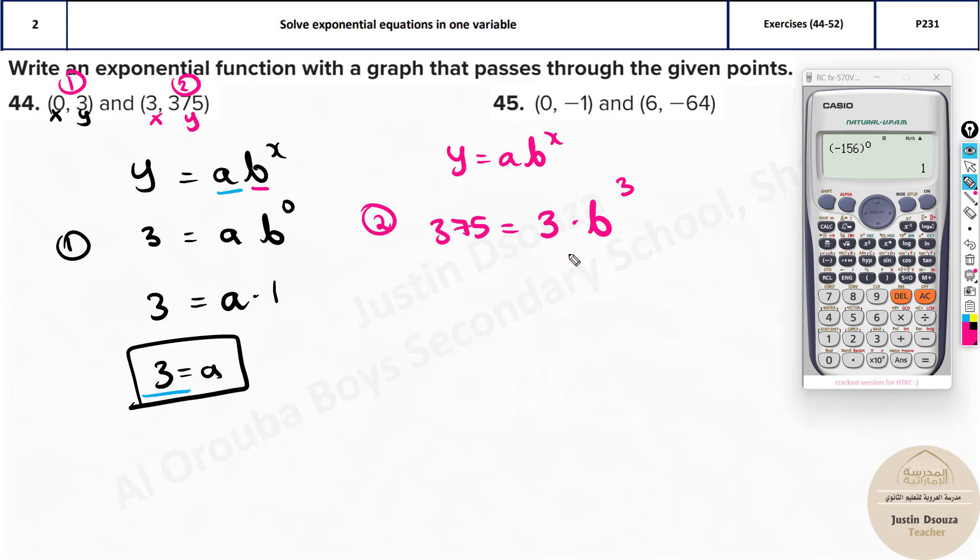But this time when you substitute y it's 375, and then x is 3. But what is a value? You just now found out. Substitute it. Multiply it by b to the power x is 3. Use your calculator. It would be 375 equals 3 multiplied by b to the power 3. Shift and solve. What would be the answer? It is 5.